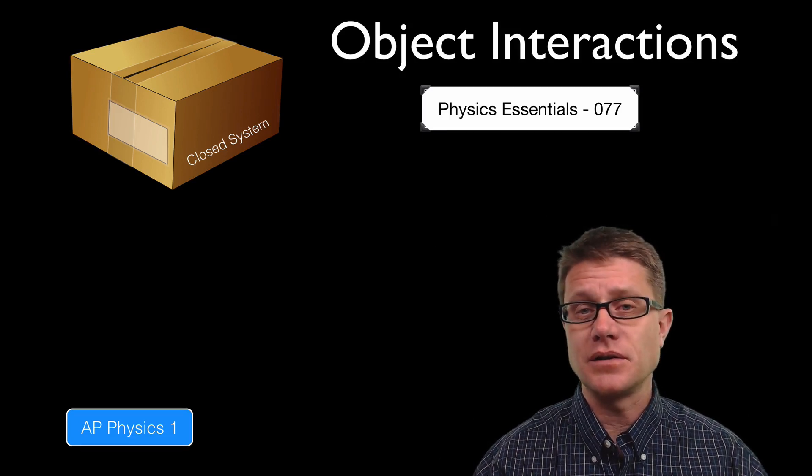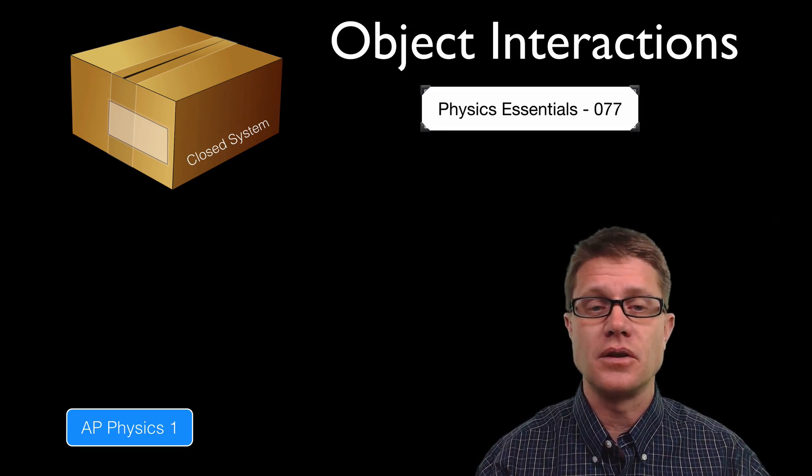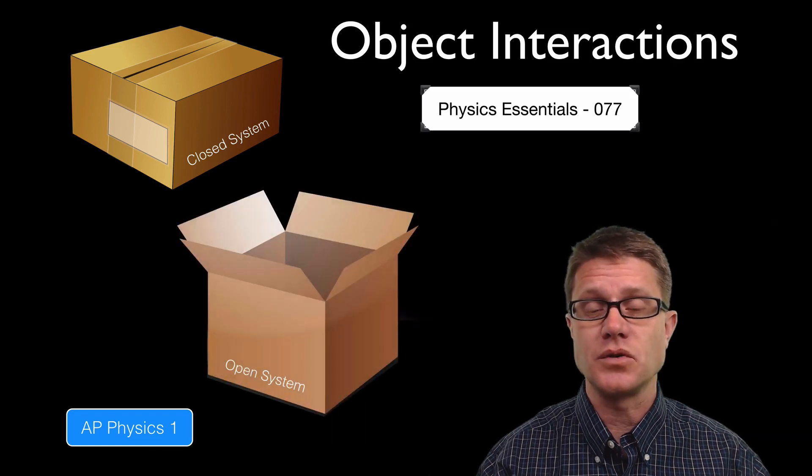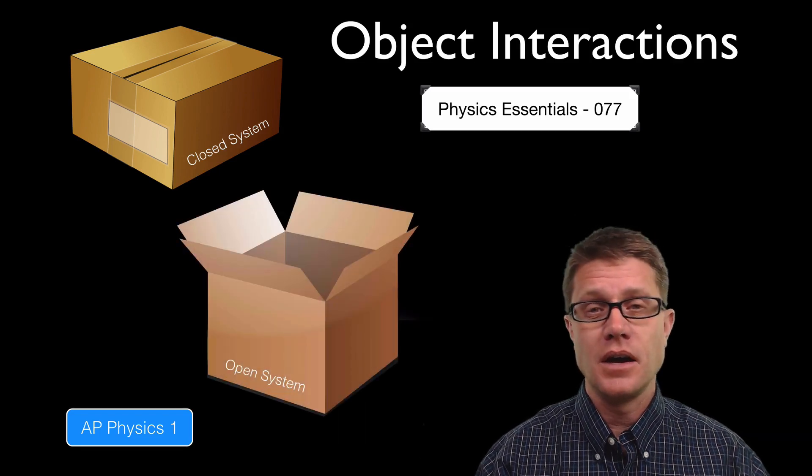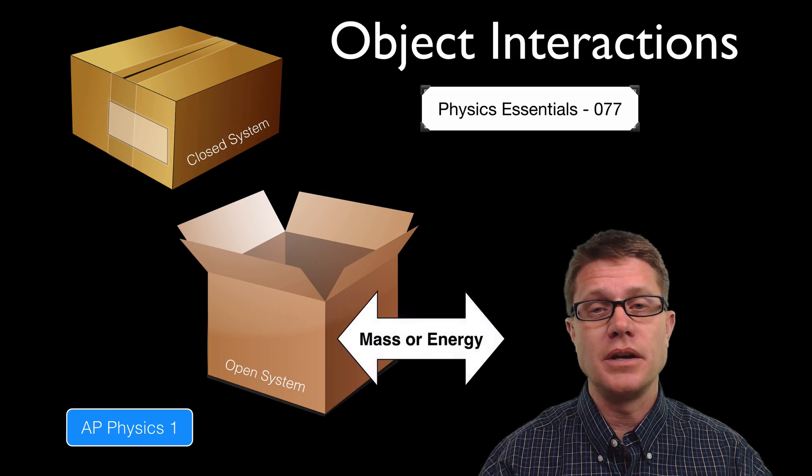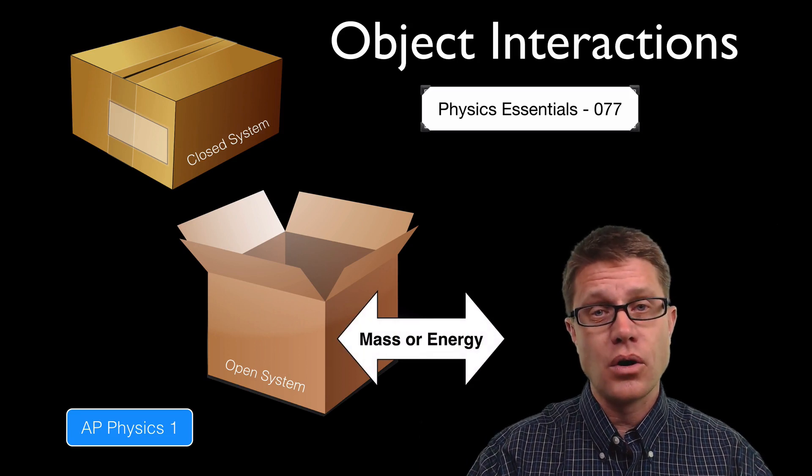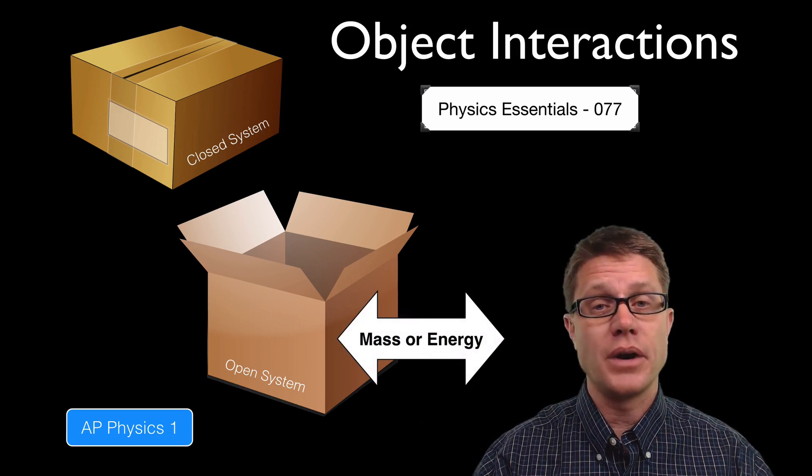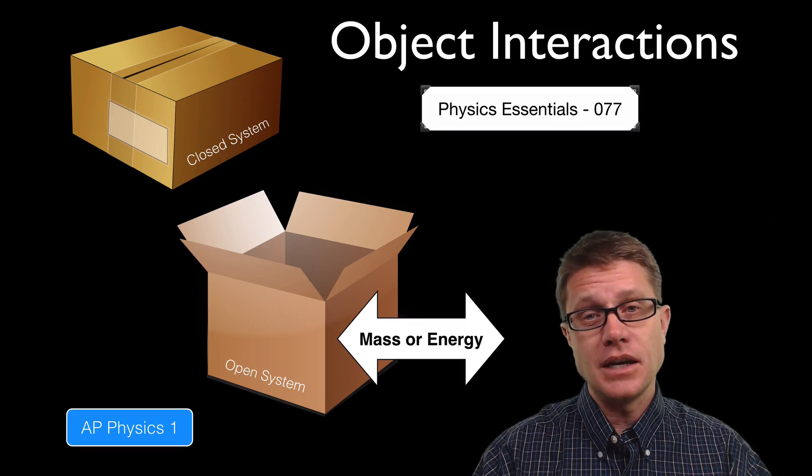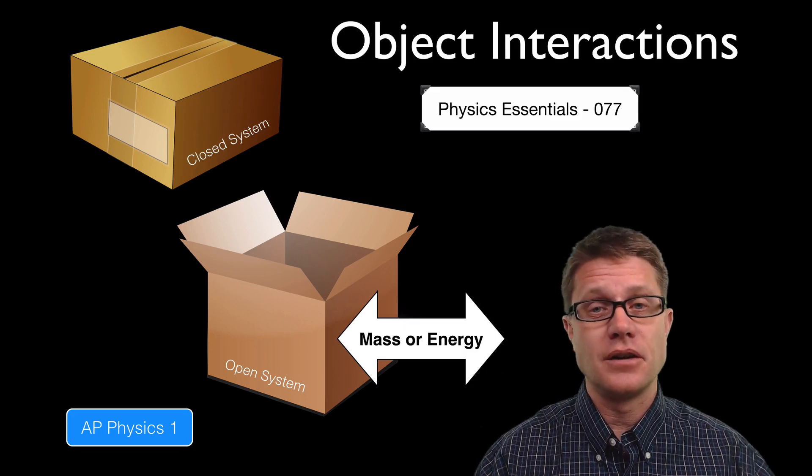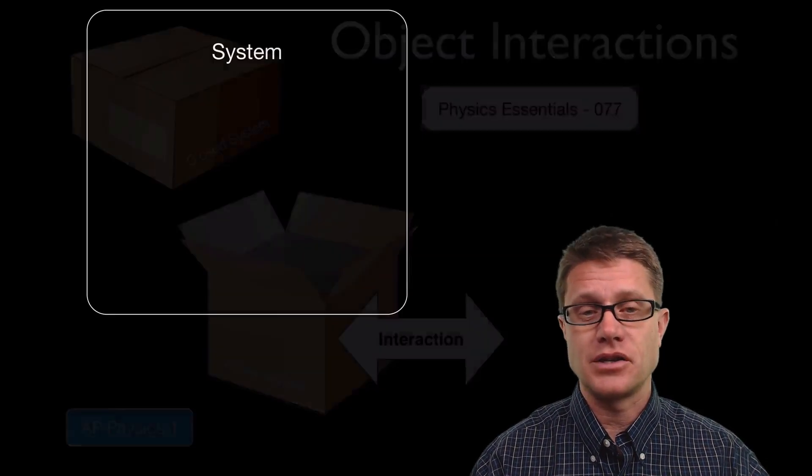Remember in the last video we talked about systems and how systems in physics could either be closed physical systems or open physical systems. An open physical system is when we are either taking in or we are removing matter or energy. And the taking in or the removal of matter or energy is called an interaction.